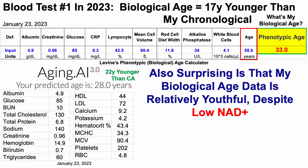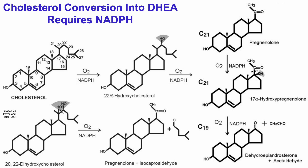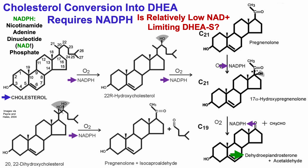So I have relatively youthful biological age data but relatively low NAD, which raises the question: which biomarkers may be improved by increasing NAD? Cholesterol conversion into DHEA — the precursor for DHEA sulfate, which declines during aging and whose low levels are associated with increased all-cause mortality risk — requires NADPH. DHEA sulfate is low and potentially a weakness in my data. From cholesterol to DHEA is five enzymatic steps, each requiring NADPH. NADPH is essentially NAD with a phosphate group, so relatively low NAD may be limiting DHEA and therefore DHEA sulfate.